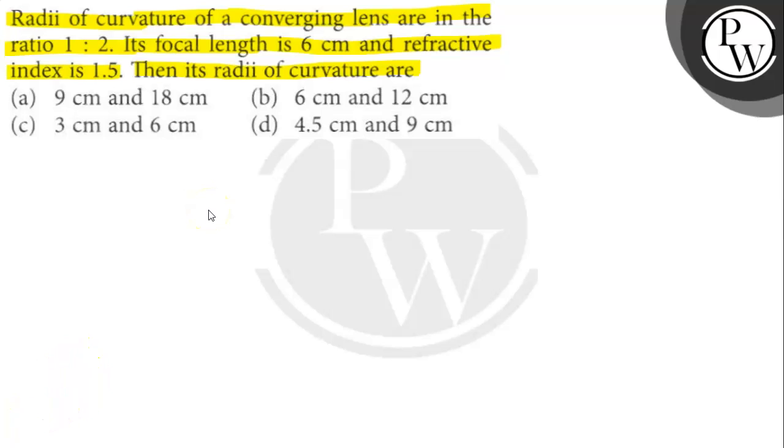In the question, it is given that the ratio of radii of a converging lens is 1 to 2. The focal length of the lens is 6 cm. The refractive index is 1.5.